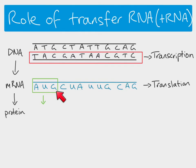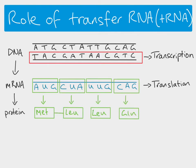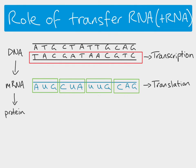The first codon on our messenger RNA gives us the amino acid methionine. Translation is the process of the ribosome moving along the messenger RNA one codon at a time, adding the correct amino acids which are joined together by peptide bonds. The transfer RNA is responsible for bringing these amino acids to the ribosome, and this translation process takes place in the ribosome.